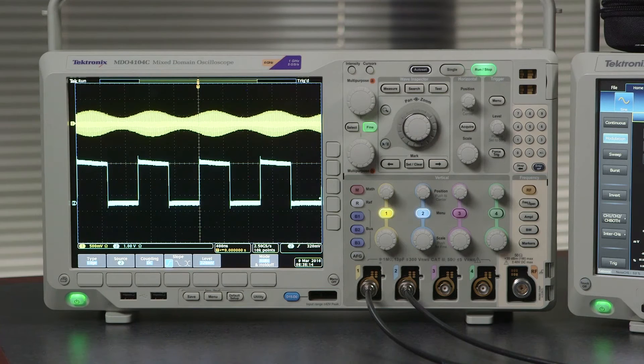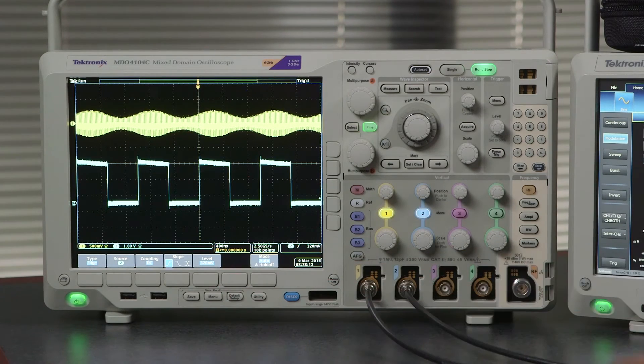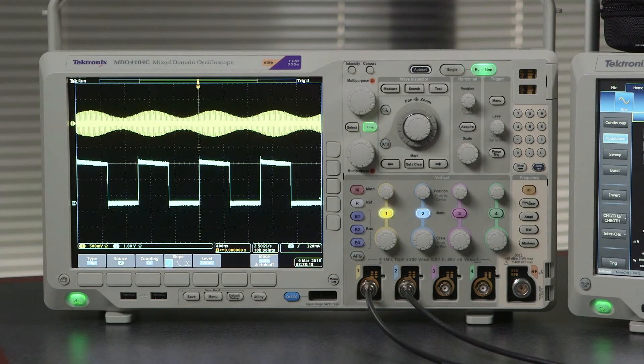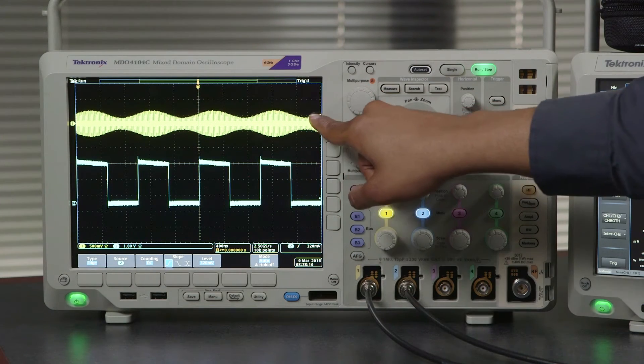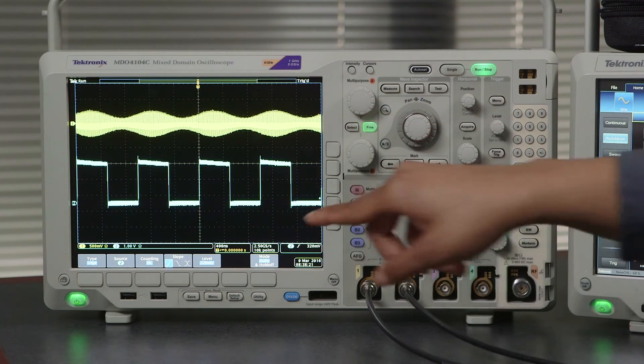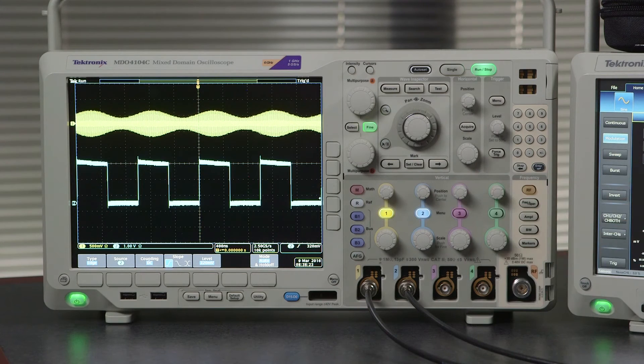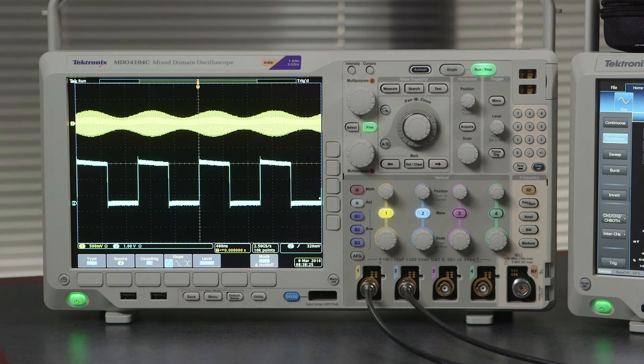We do have to change the vertical resolution on our MDO and also be sure to switch your source to channel 2 so that it triggers on the second channel. As you can see, you can see the envelope of the modulated signal that looks very much like the modulated signal that we have on the AWG 4000.